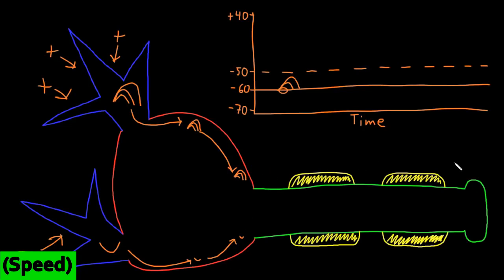Action potentials being conducted down the axons of neurons are the way that neurons can transmit information over a wide range of distances, which may be one meter or more. Action potentials have some big differences from graded potentials in that they usually have the same size and duration for any particular neuron, and they are usually conducted the entire length of an axon basically unchanged, regardless of the distance of that axon.